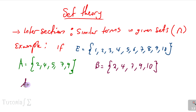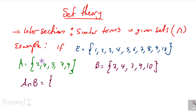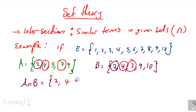We also have set B that has elements 2, 4, 7, 9, 10. You are asked to find A intersection B. Intersection is telling us to find common terms in both sets. We have 2 in A and 2 in B, so 2 is common. We have 4 in both, 7 in both, and 9 in both. So A intersection B = {2, 4, 7, 9}.